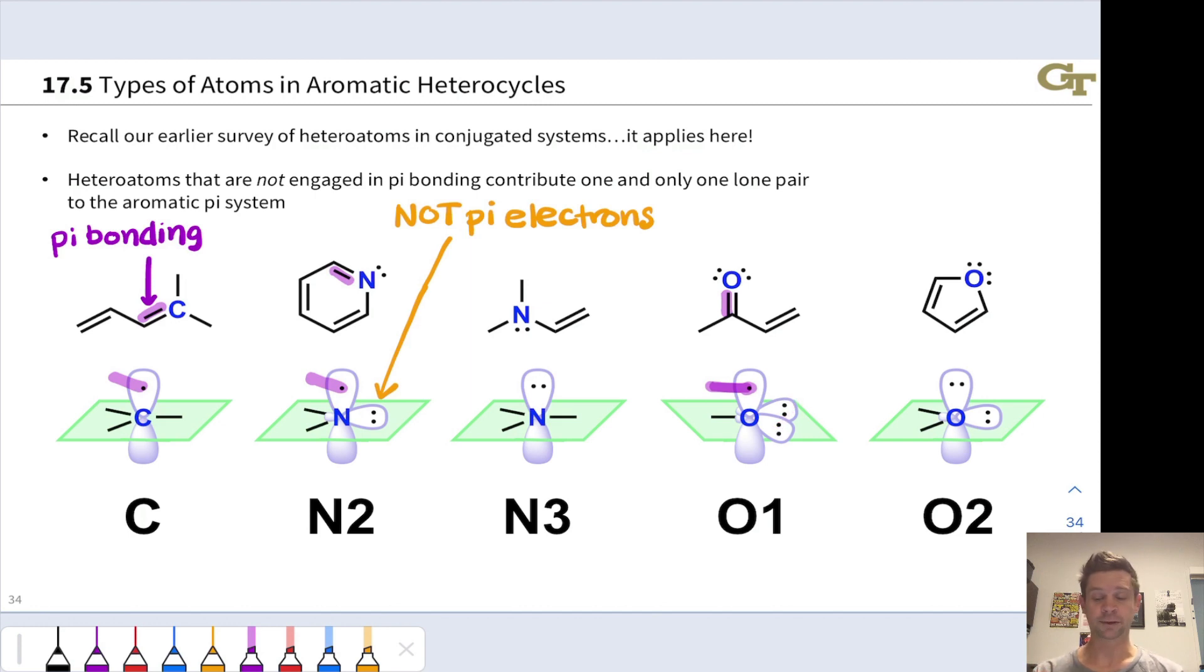Similarly with the O2 oxygen, it has one lone pair that is not part of the pi system, but because it has only single bonds, no pi bonding, this lone pair is capable of occupying a p orbital, and it will do so when there are p orbitals next door to delocalize. So that oxygen can contribute two electrons to the pi system. In fact, this is yet another important aromatic heterocycle, furan, showing up with the O2 oxygen.